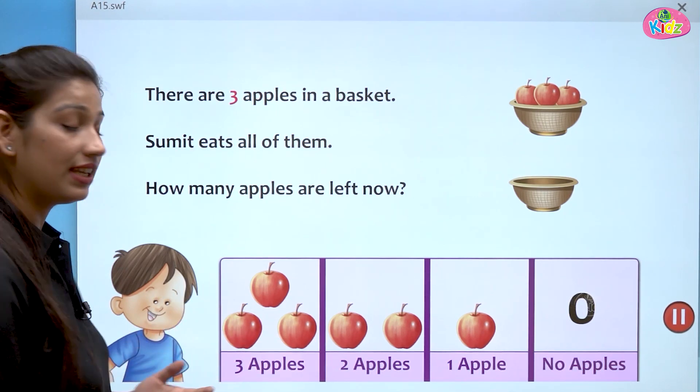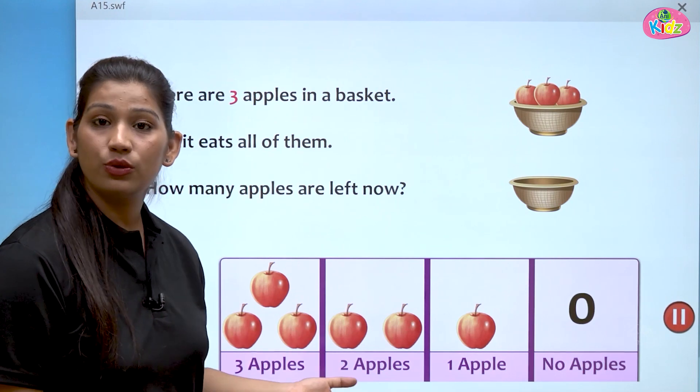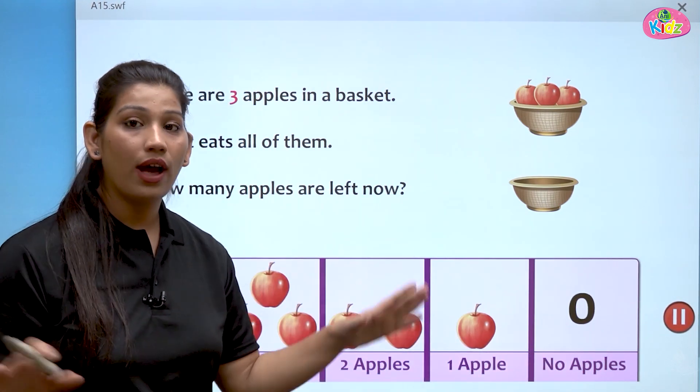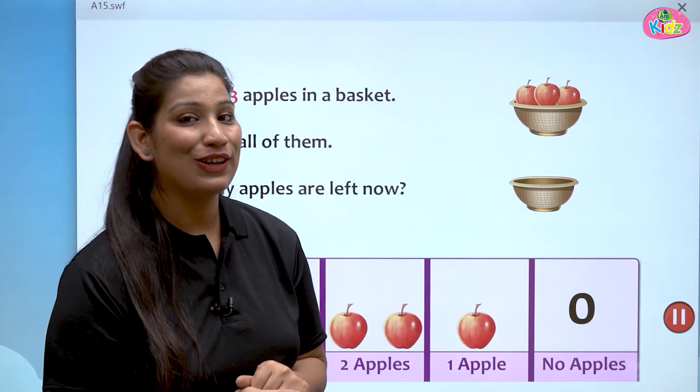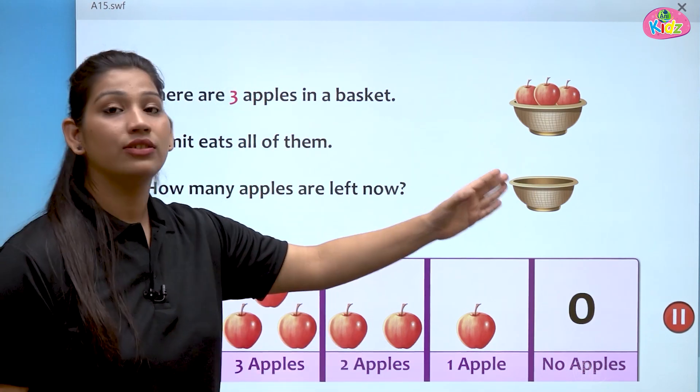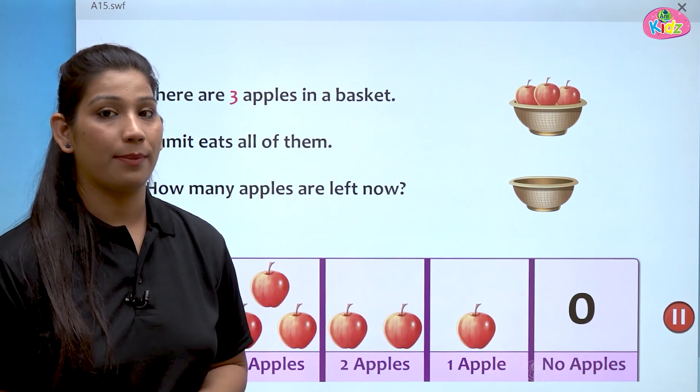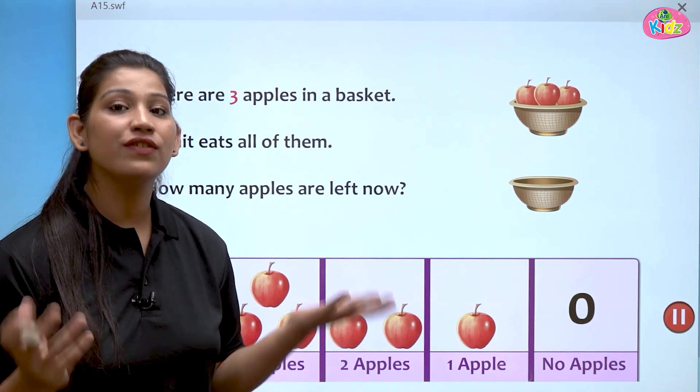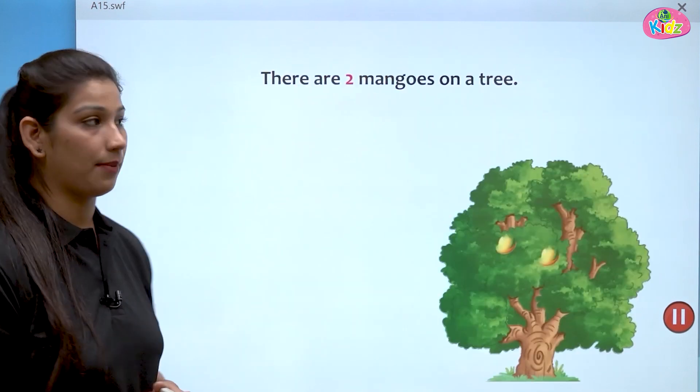You can see first, it was three apples. Then, it was two, one. And then, when there is no apple, we will say zero. We will say zero. Let us see one more example.